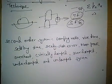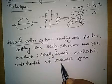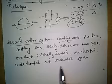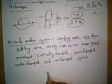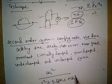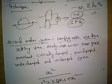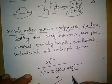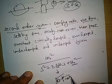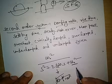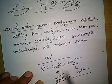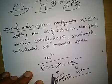The next topic is the Second Order System. For a given transfer function, the damping ratio and rise time can be asked. We know that for a second order system the denominator is of the form s² + 2ζωₙs + ωₙ², where ζ is the damping ratio and ωₙ is the natural frequency. Sometimes the transfer function is given and we have to find the damping ratio, or vice versa.